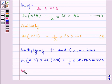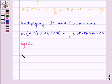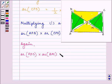Again, following the same procedure, area of APD is half into PD into AL, and area of BPC is half into BP into CM. So area of APD into area of BPC equals 1/4 into PD into AL into BP into CM.